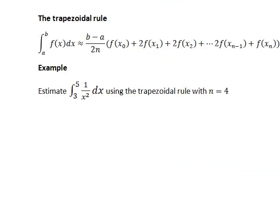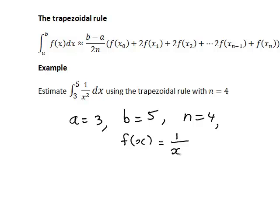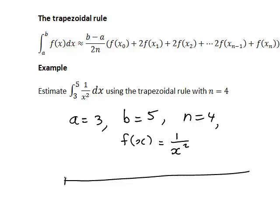Let's see how this works in practice with a specific example. Suppose we want to estimate the integral from 3 to 5 of 1 divided by x squared using the trapezoidal rule with n equals 4. So the starting point a is 3, the finishing point b is 5, n is 4, and the function f(x) is 1 divided by x squared. The first step is to work out the successive values x_0, x_1 up to x_n. As noted, x_0 is the starting point a, which is 3, and x_n is the finishing point b, which is 5.